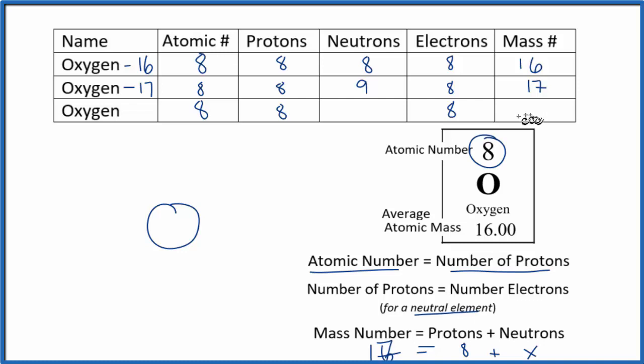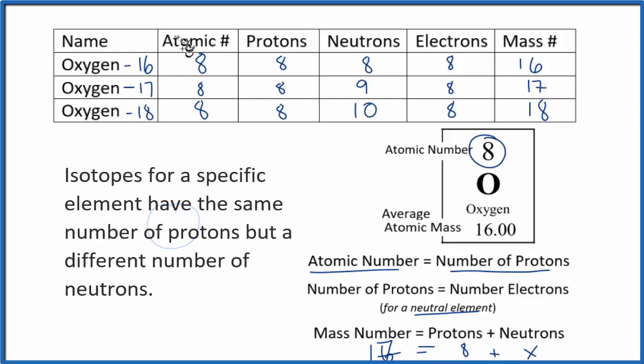And then a little bit more would be oxygen-18. So 8 plus something gives us 18 means we'd have 10 neutrons. This would be oxygen-18. There's really no way just to look at oxygen and know how many isotopes they'll have or their abundance. But when you're given these tables, you might be asked questions like this.